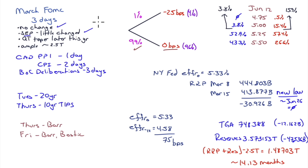The FOMC decision is a foregone conclusion — we're at 99% right now on zero change. We also get the SEP; I expect it to be little changed. I expect in the press conference they'll make some statement about the QT taper perhaps later this year — this is the first meeting where Powell said they're going to talk about QT tapering. I think probably later this year it starts to happen, and if there's a question about the level of ample reserves, I think it's around $2.5 trillion.